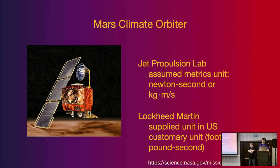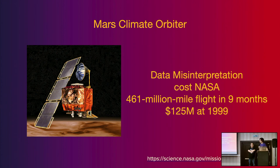The problem was revealed to be about units. JPL scientists designed using international metric units — newtons, kilograms, meters — while Lockheed Martin, the US supplier, supplied units in the US customary system: foot, pound, and seconds. Even though the exact numbers might have been right, because of the different understanding of those numbers, it ended up costing NASA $125 million in 1999. The orbiter traveled 400-plus million miles over nine months but never arrived at Mars orbit.